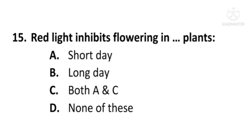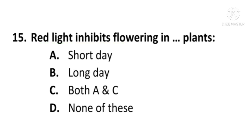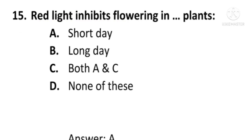Next question: Red light inhibits flowering in — A) Short-day plants, B) Long-day plants, C) Both, or D) None of these. The correct option is A, Short-day plants. Red light inhibits flowering in short-day plants; A is the correct option.